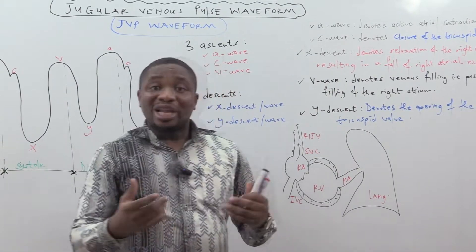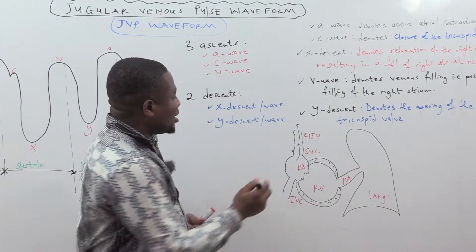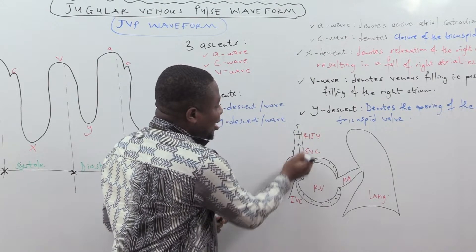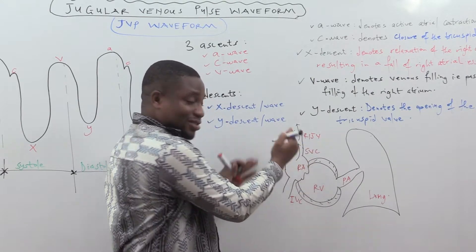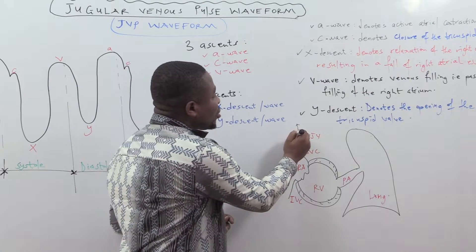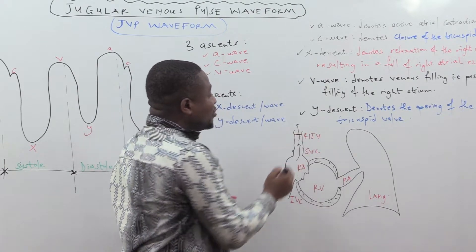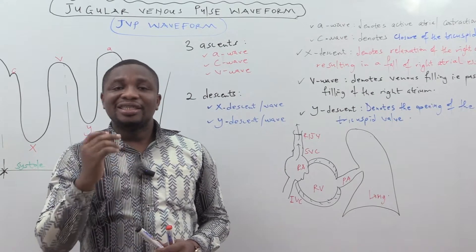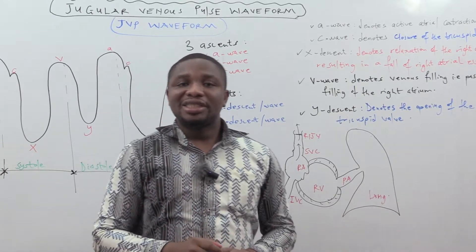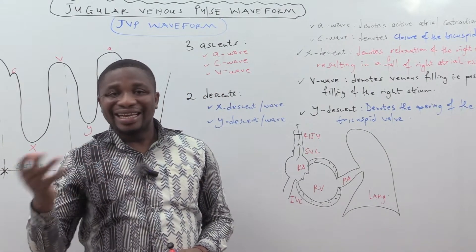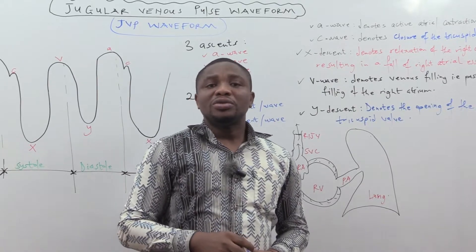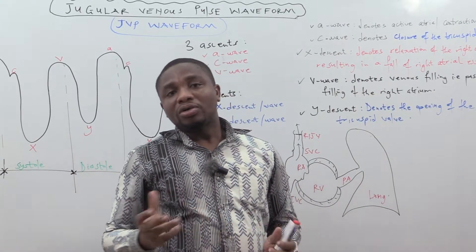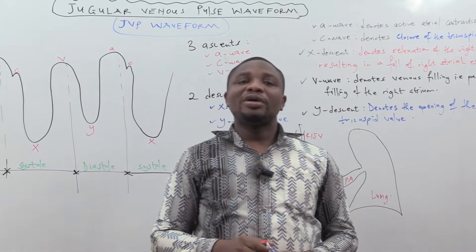So when we say jugular venous pulse, we are referring to the oscillating top of a vertical column of blood in the right internal jugular vein that reflects the pressure changes in the right atrium in the cardiac cycle. So today we are looking at the jugular venous pulse waveform, the JVP waveform.